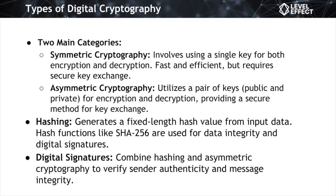Hashing plays a crucial role in ensuring data integrity. It generates a fixed-length hash value or digest from input data of varying sizes. Hash functions are designed to be one-way and irreversible, making it computationally infeasible to reverse engineer the original data from the hash. An example combining hashing and asymmetric cryptography is digital signatures: the sender hashes a message and encrypts the hash using their private key. The recipient uses the sender's public key to decrypt it and compares the hash to a newly computed hash of the received content—if they match, it verifies both integrity and authenticity of ownership.